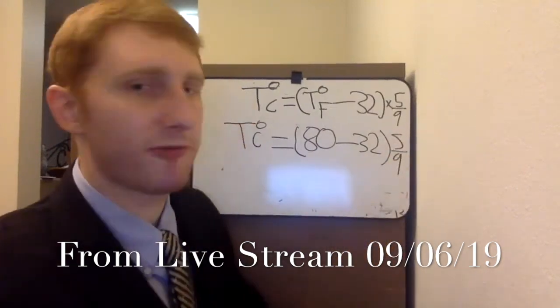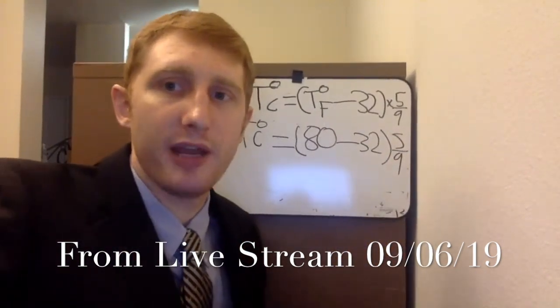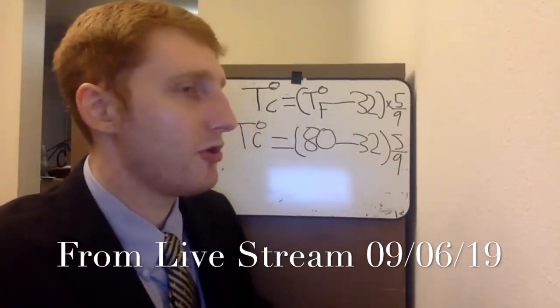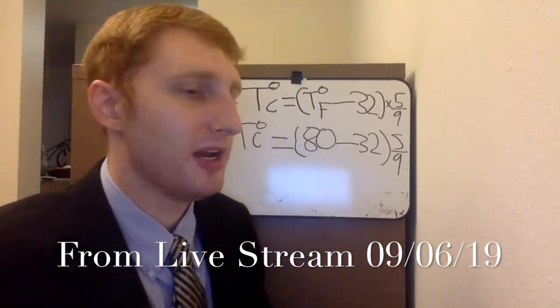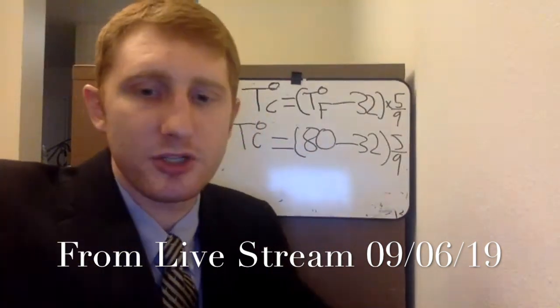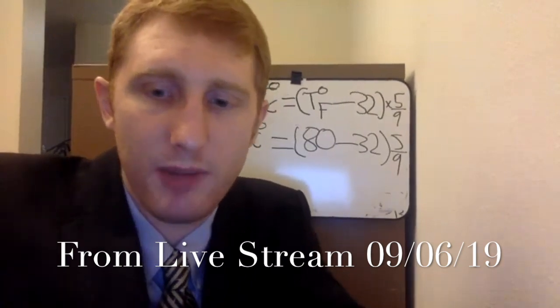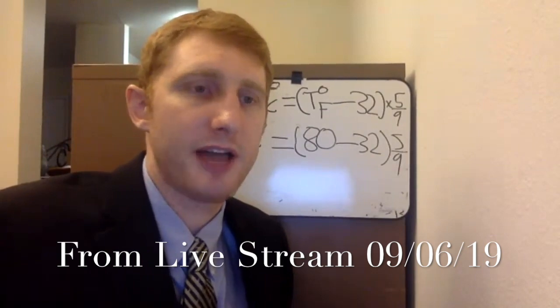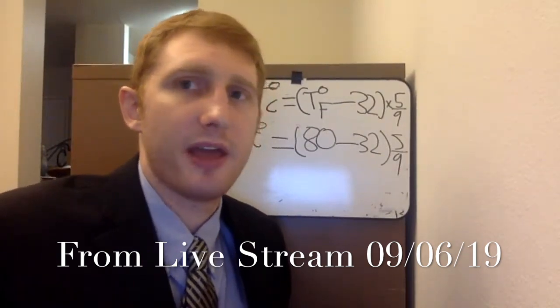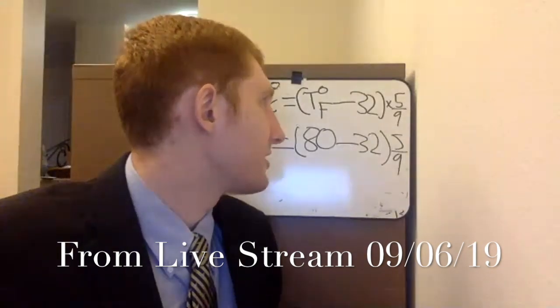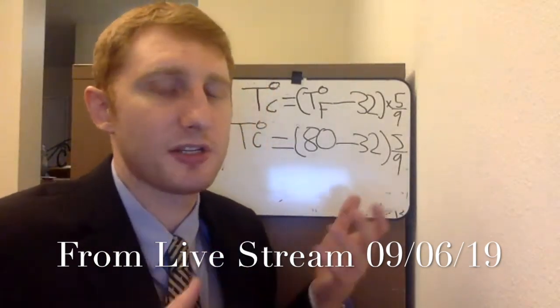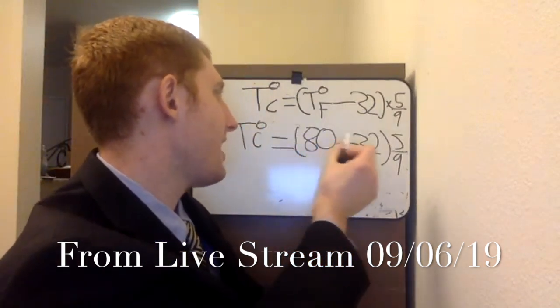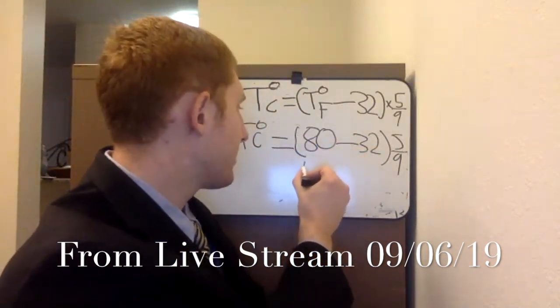So you'd have your 80 minus your 32 times 5 over 9. And hopefully you guys remember from your PEMDAS, your order of operations rules, right? It's please excuse my dear aunt Sally. We've got parentheses. We've got those rules where you start with the parentheses. So we would do what's in the parentheses first. So we do 80 minus 32.